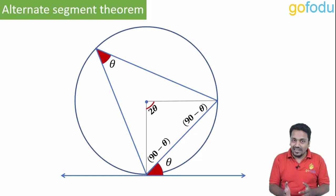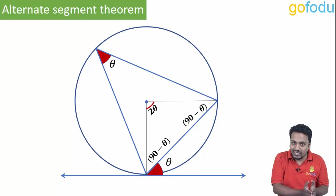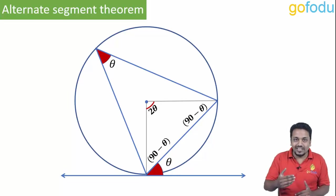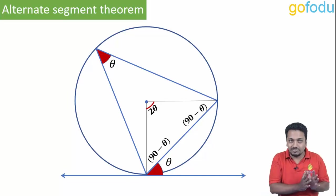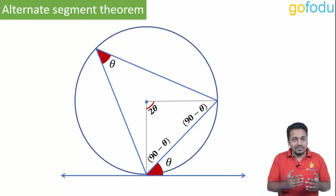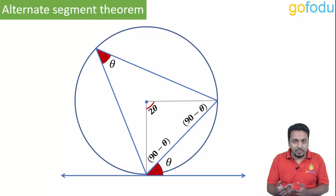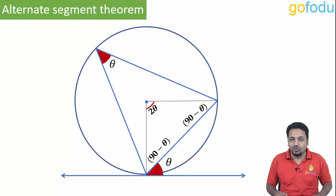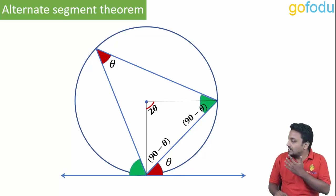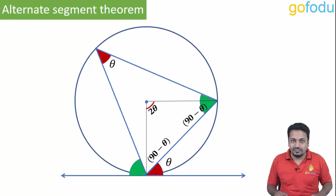And if the angle at the center is 2 theta, the angle at the circle will be half of that — that is theta. Similarly, the angles marked in green will also be equal.